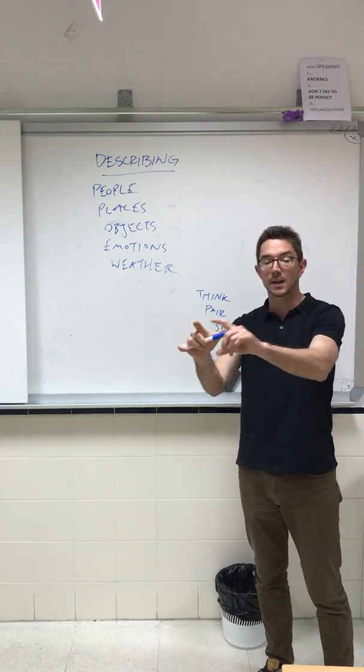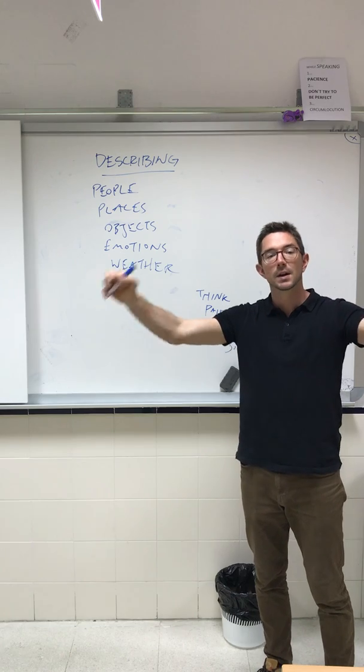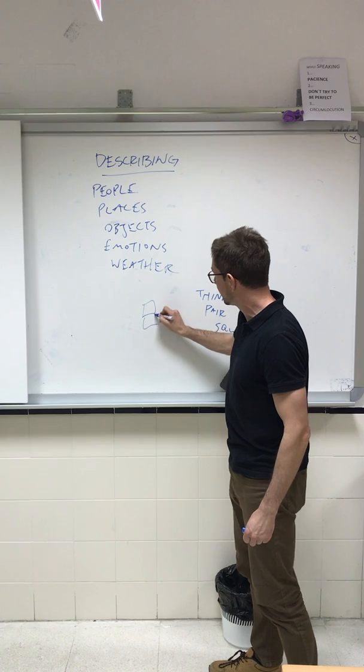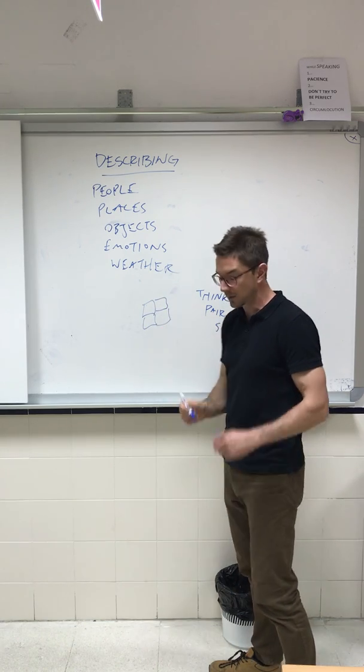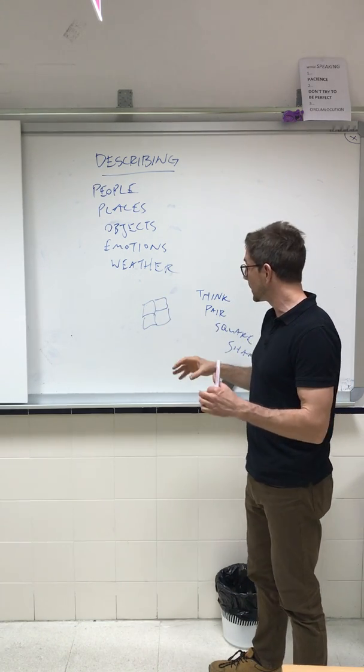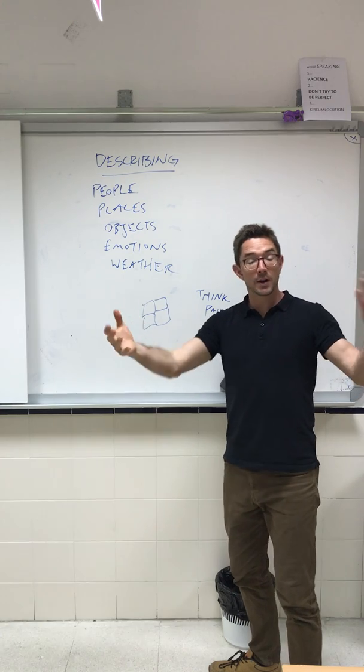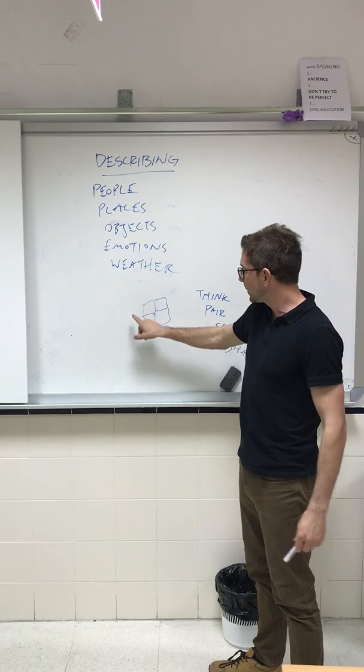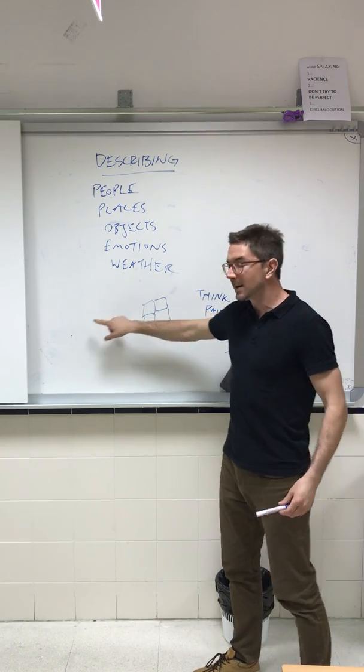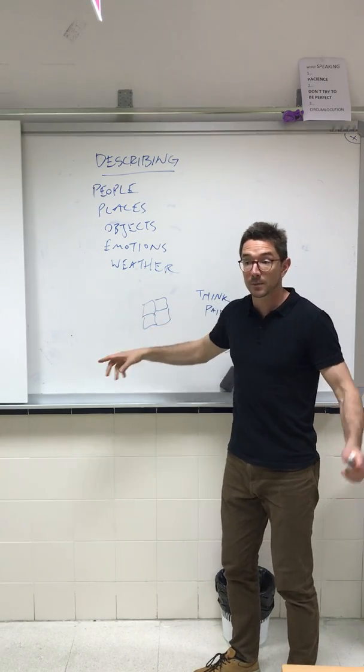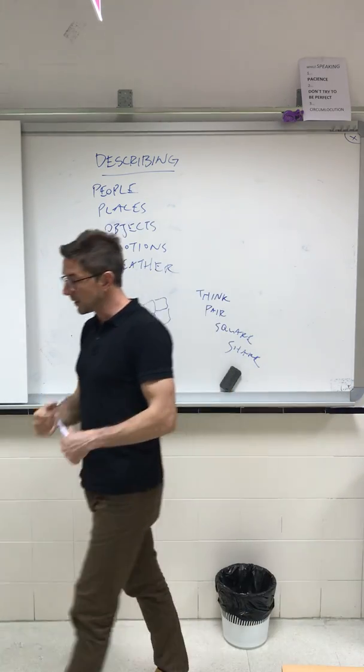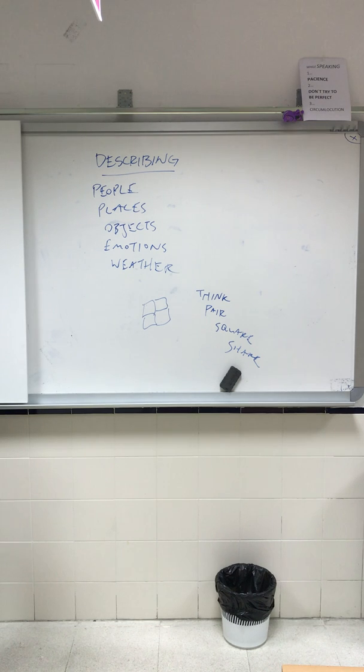So first in pairs, think together, but don't share with the rest of the class. Later, we will square, meaning we'll put four people together, four people in one area, one station. And then after that, we can go ahead and share with the class. And then the final step, we'll put everyone together and share. And this way, we can all go naming different adjectives and adverbs that perhaps others have thought of. So together, we'll increase our amount of vocabulary in these topics.